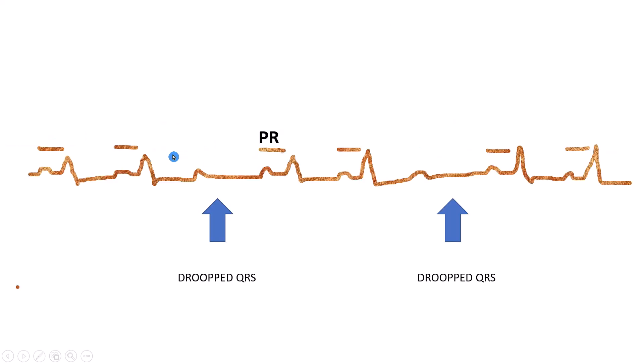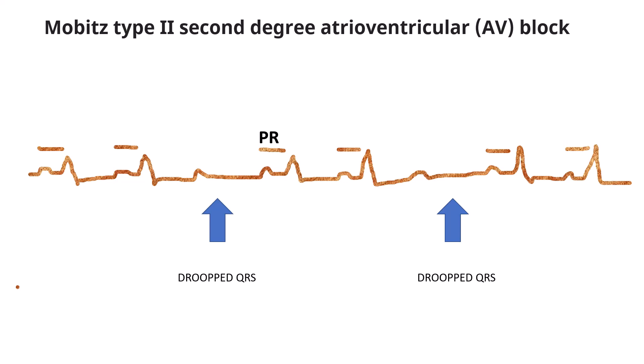Mobitz type 2 AV block is a rarer and more serious form of second degree heart block. Its characteristic feature is the sudden appearance of a single non-conducted sinus P wave without progressive prolongation of PR intervals and the noticeable shortening of the PR interval in the beat following the non-conducted P wave versus the PR before the non-conducted P wave.